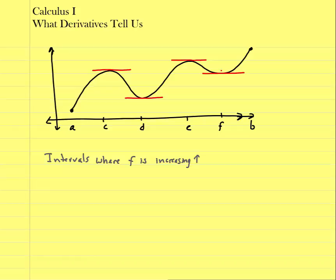These are the points where the derivative changes from a positive to a negative sloping tangent line. At the endpoint A, the interval is neither increasing nor decreasing — I use a parenthesis because there are an infinite number of tangent lines there. So the function is increasing from A to C, from D to E, and from F to B. At B it's open as well, because at a closed endpoint it would be neither increasing nor decreasing.